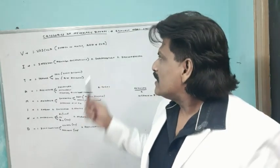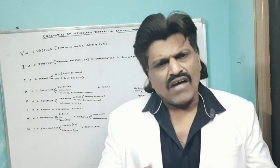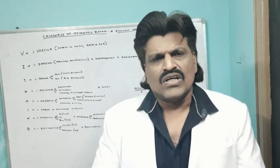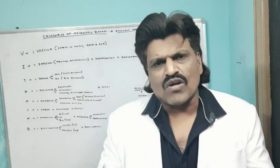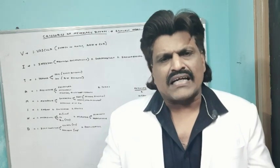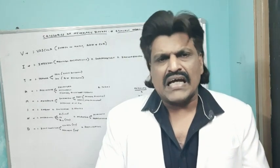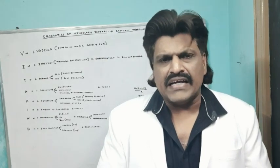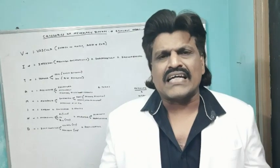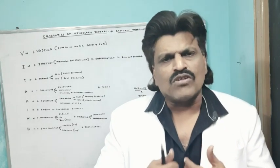Today we are going to talk about a very interesting topic: the categories of neurological diseases — the etiology made easy. We have so many categories of neurological disorders, and to remember all of them efficiently for making a diagnosis can be difficult. So we have a very interesting mnemonic: VITAMIN D. If we remember this mnemonic, we can almost remember all the categories of neurological disorders.